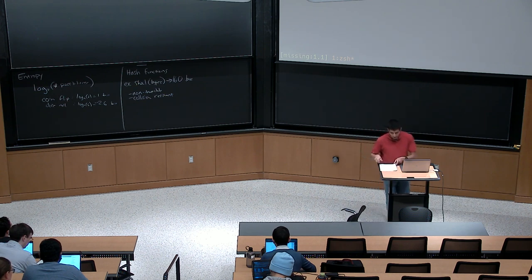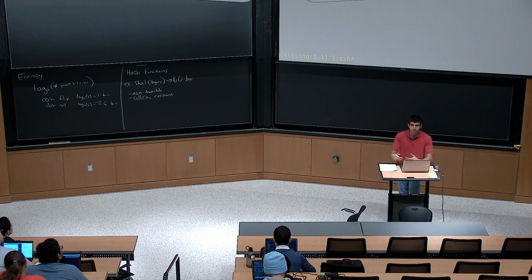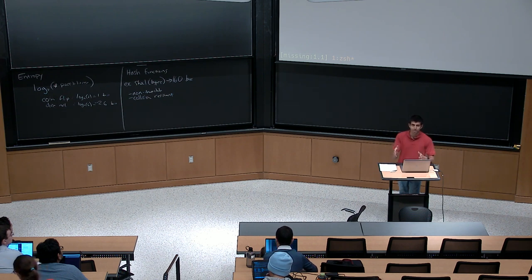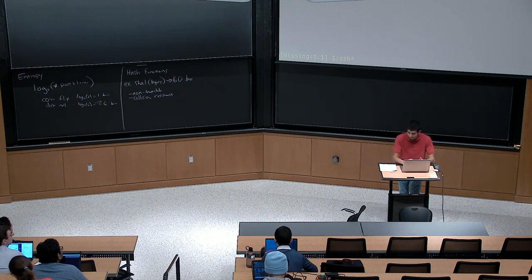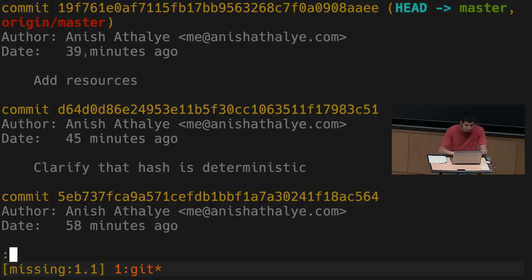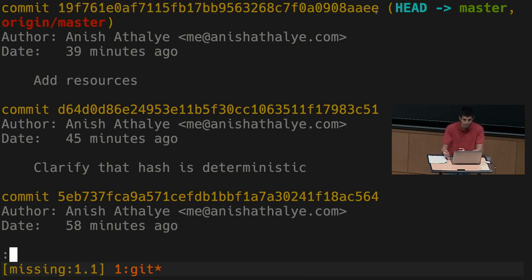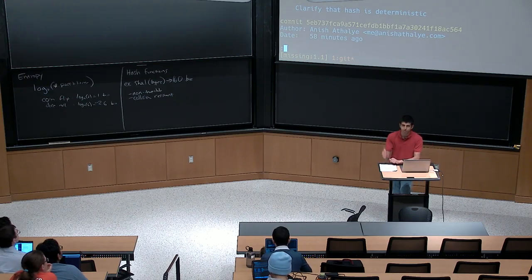What are hash functions actually useful for? We've already seen one application in Git for content-addressed storage. In Git, we want a uniform way of naming different objects in the object store, and Git addresses all of them by their SHA-1 hash. You have the actual data you want to store, and to name that piece of data you just use its SHA-1 hash. If I do 'git log', it shows commits — and this number here is the SHA-1 hash applied to the commit object describing that particular commit.